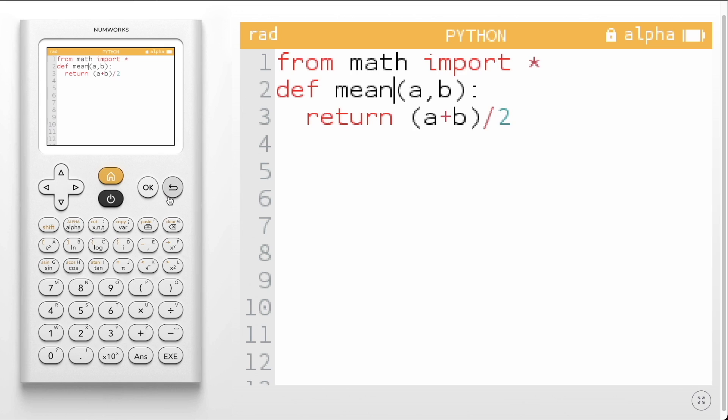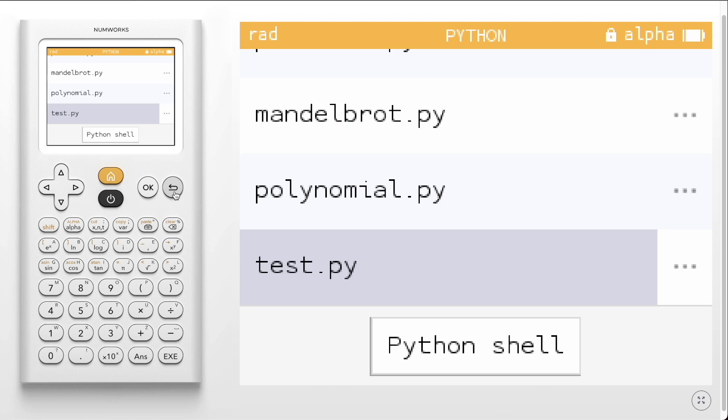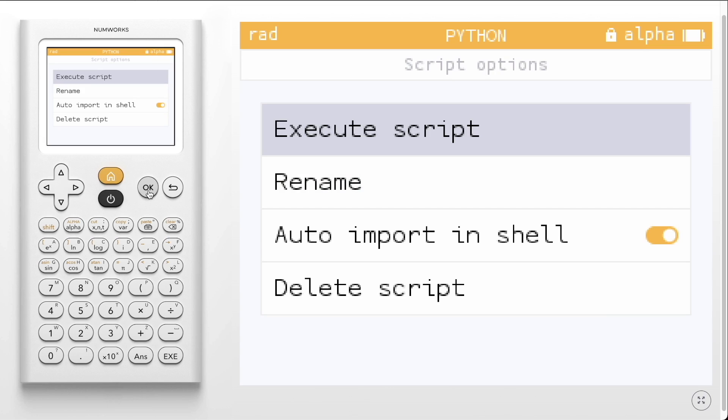we return to the list of scripts by clicking the Back button. If we're only interested in running a single script, we can navigate over to the ellipsis next to the script name and click OK. Select Execute Script.